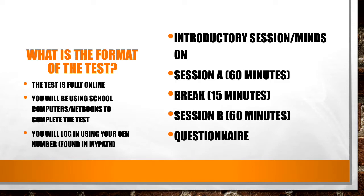The format of the test is slightly different from previous years, as this test is now fully online. You will be using school computers or netbooks to complete the test. Importantly, you will log in using your OEN number — that stands for Ontario Education Number. That is the number you are identified by no matter which school you attend in Ontario. You are not identified by your name when the government marks the test; you are identified by your OEN number. You can find that on your MyPath or on any report card you receive, and you will need it to log into the test.